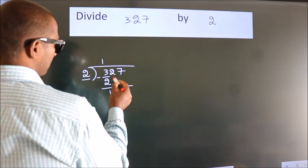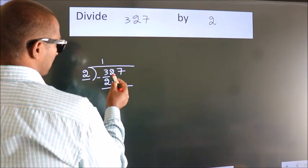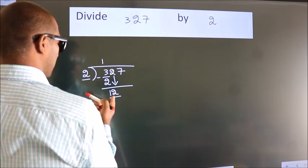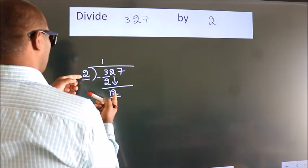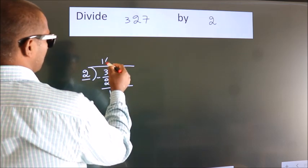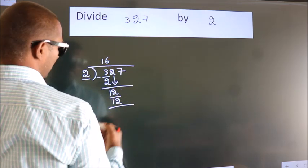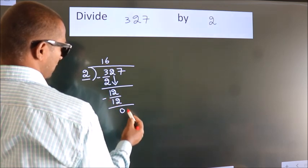After this, bring down the beside number. So, 2 down. So, 12. When do we get 12? In the 2 table, 2 sixes are 12. Now, we subtract. We get 0.